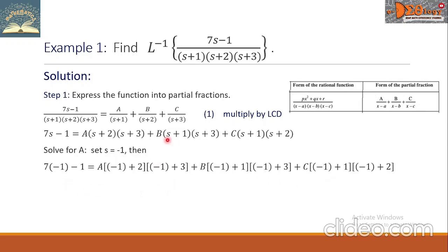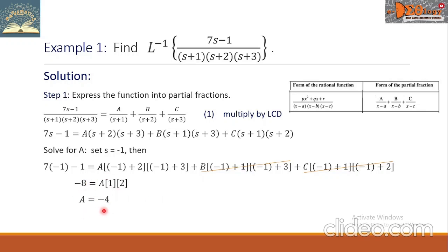So b and c will be cancelled out. Simplifying the group for a and the left side, it becomes negative 8 equals a multiplied by 1 multiplied by 2. Dividing by 2, the value of a is negative 4. Let us substitute this value of negative 4 into equation 1.